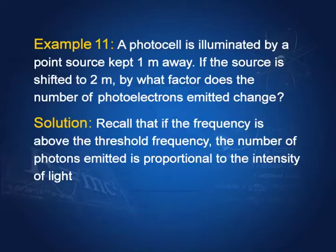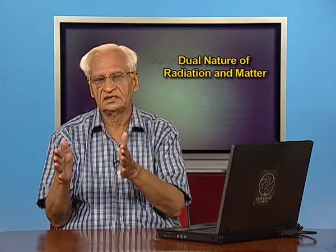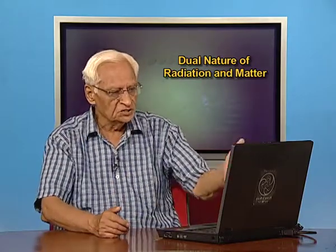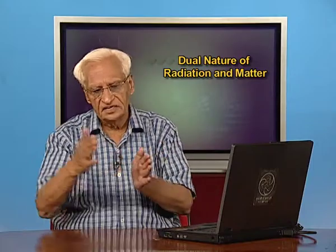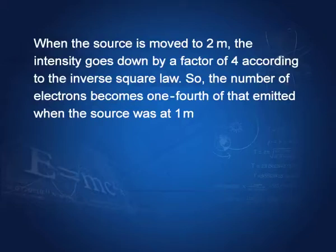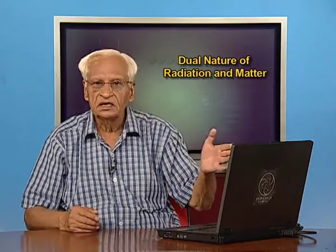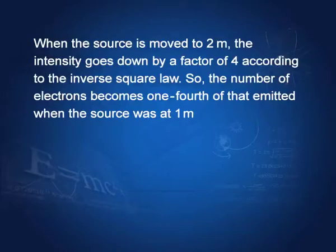A photocell is illuminated by a point source kept 1 meter away. If the source is shifted to 2 meters, by what factor does the number of photoelectrons emitted change? The number of photoelectrons emitted is proportional to intensity if the frequency is above the threshold frequency. When the source is moved from 1 meter to 2 meters, the intensity changes by a factor of 4 according to the inverse square law. Therefore, the number of electrons will also decrease by a factor of 4 — they will become one-fourth of that emitted when the source is at 1 meter.